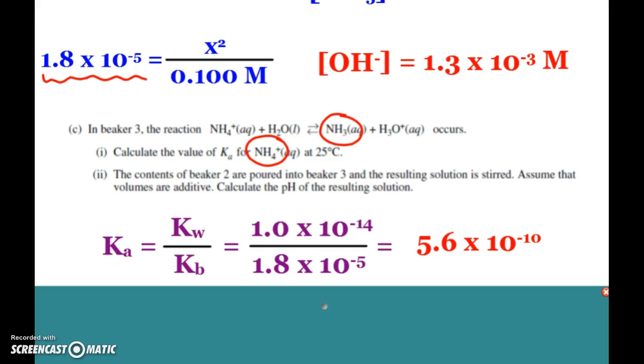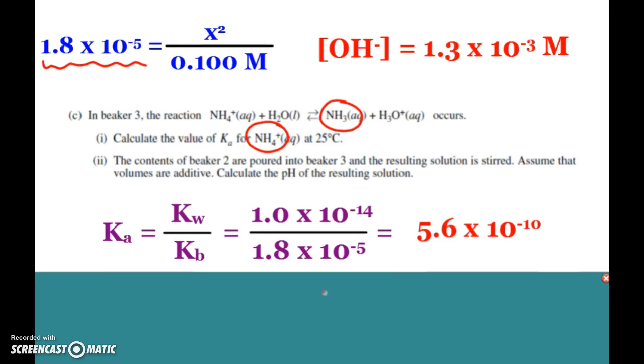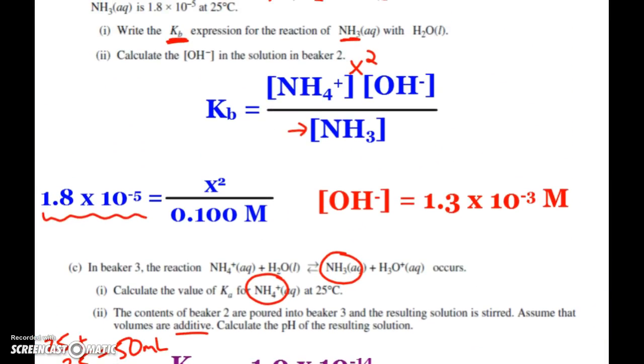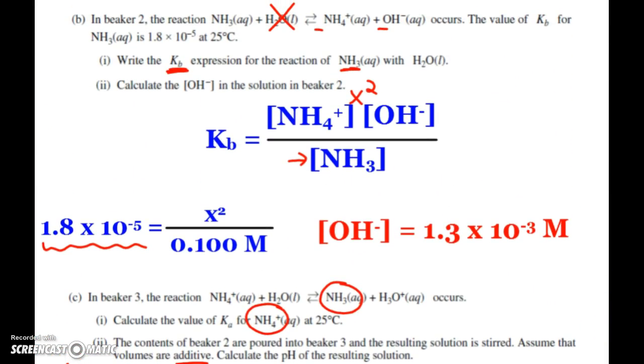Okay, again, we're still kind of in—I thought those were all pretty attainable as long as we remember some of the basics, pun intended, of our weak acid-base chemistry and our strong acid-base chemistry. Now we're going to get a little more challenging for these next couple parts. Here it says the contents of beaker 2 are poured into beaker 3 and we stir that solution. We assume that the volumes are additive, and all that means is we had 25 mL in each, so 25 plus 25, we now have 50 milliliters total. Now we want to know the pH of the resulting solution.